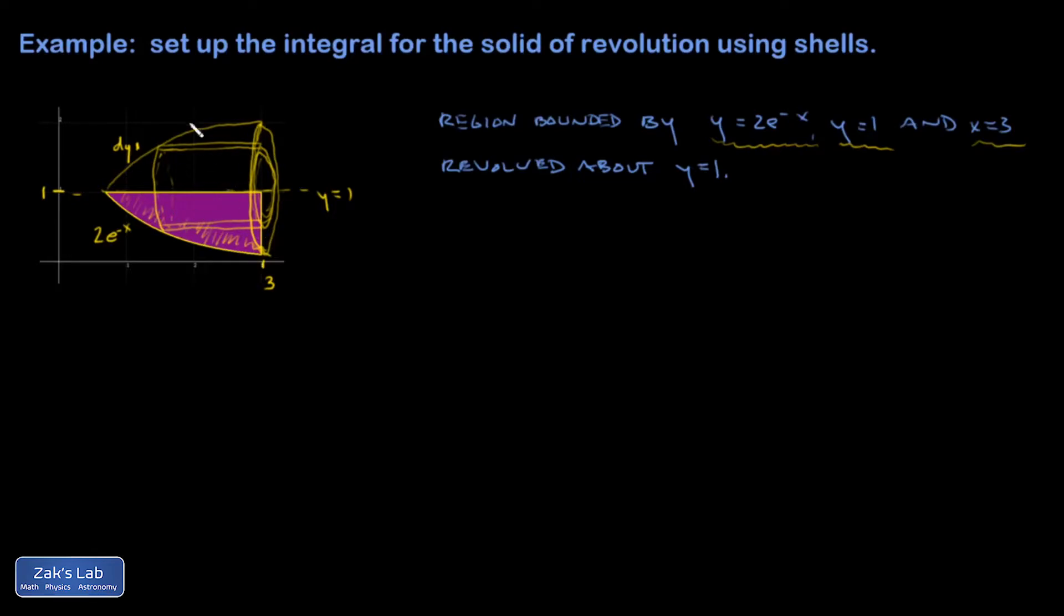To get the volume of one of these shells, I'm going to need to get the radius of the shell. And that's the distance here from y equals 1 down to whatever the y coordinate is of the bottom edge of this thing. So my plan is to identify each of these shells by that y coordinate and then add them all up as I go from the minimum value of y all the way up to y equals 1.